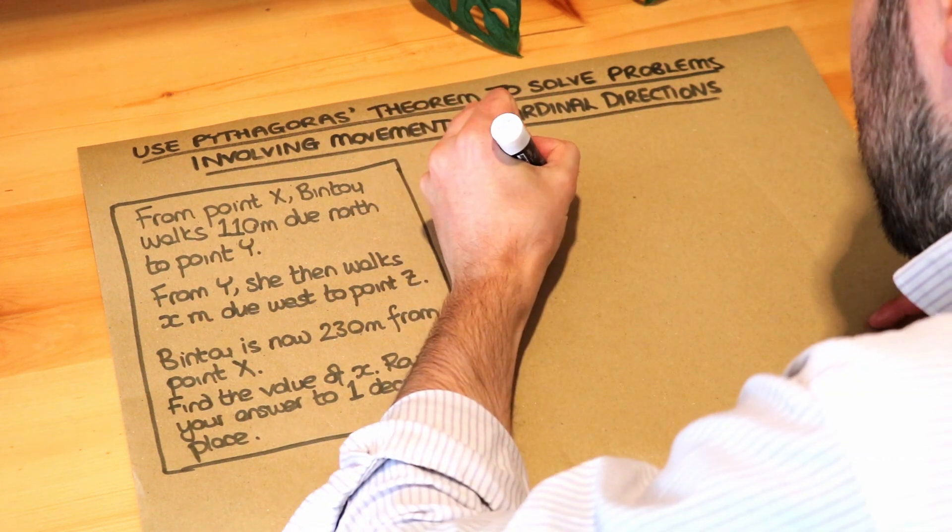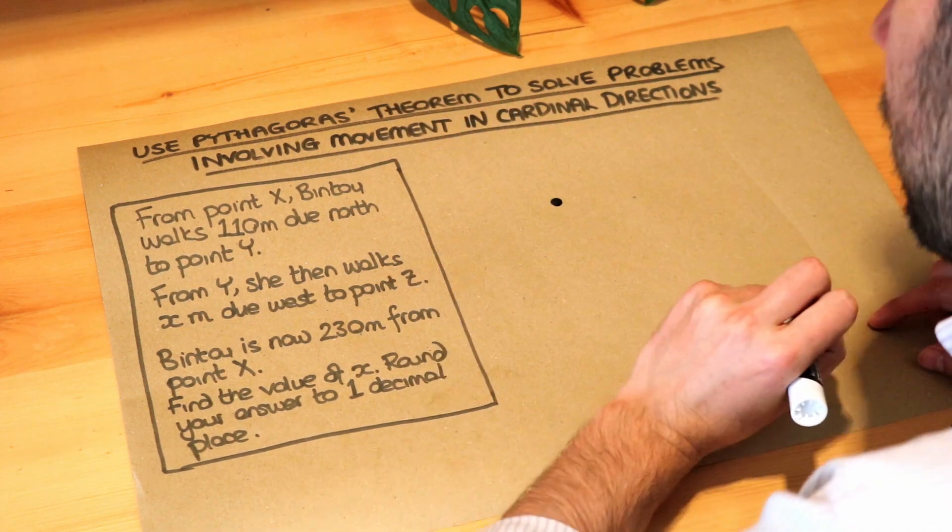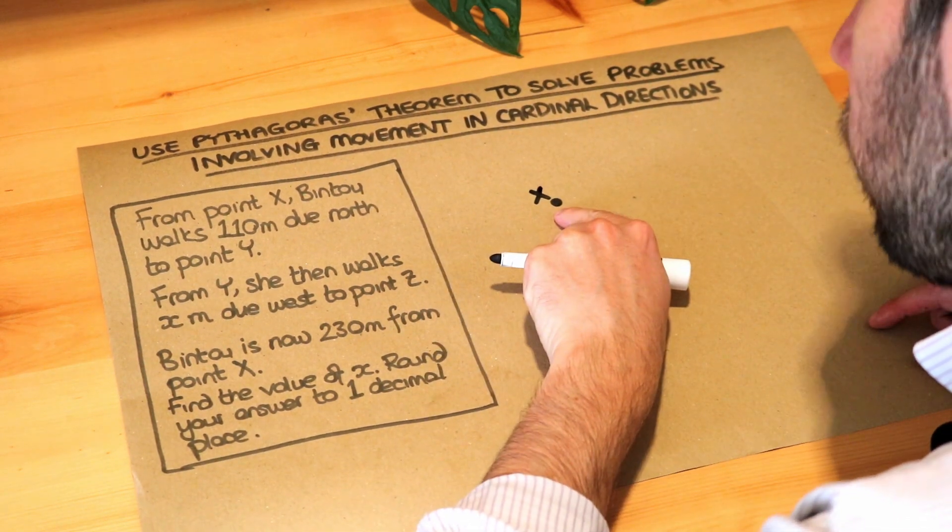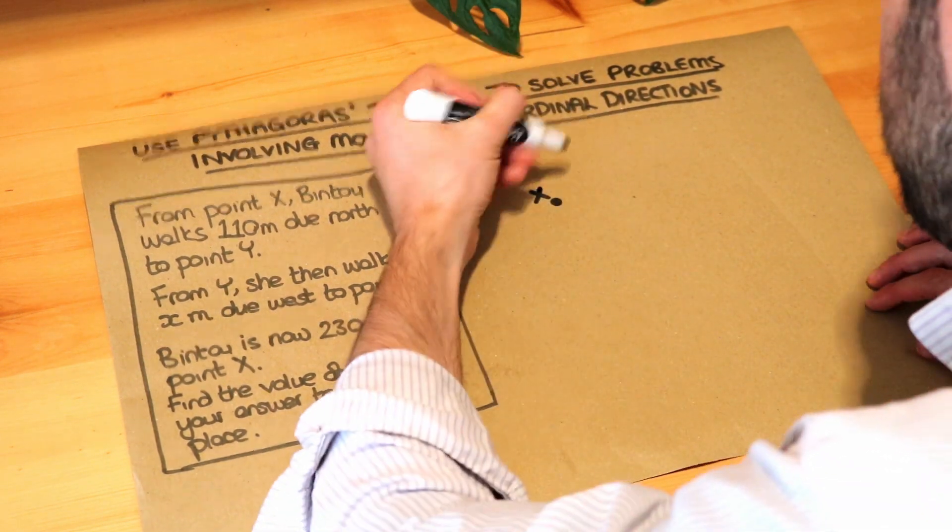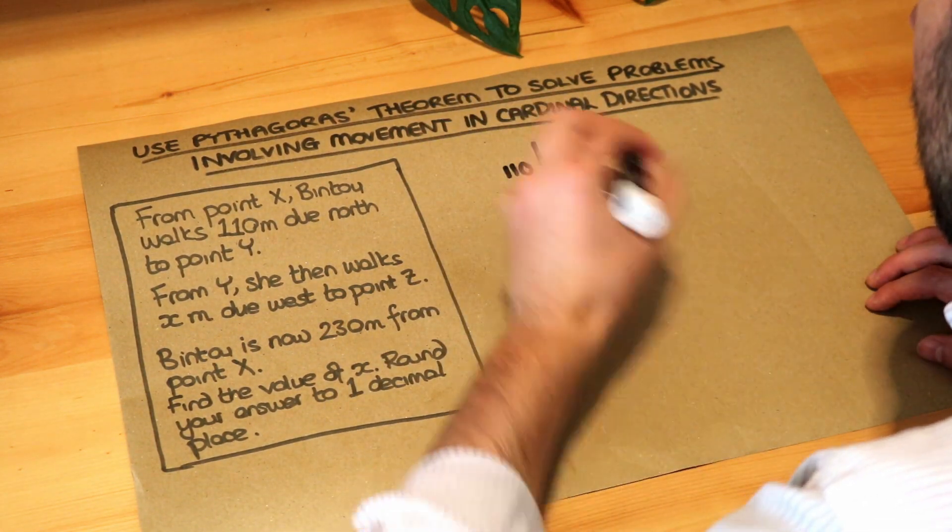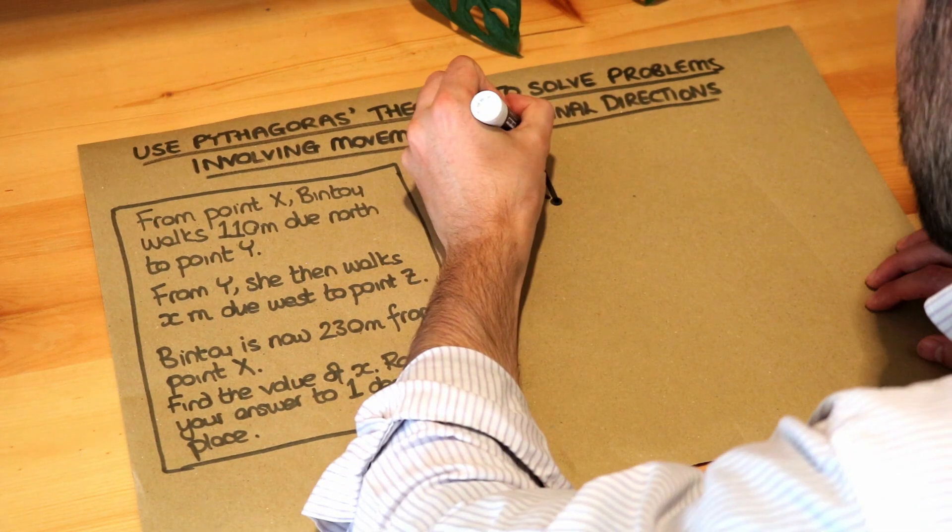Now the important thing here is to draw a diagram. If Bintu is initially here from point X, Bintu walks 110 meters due north. So let's do 110 meters and we're now at point Y.